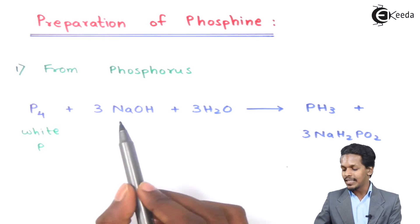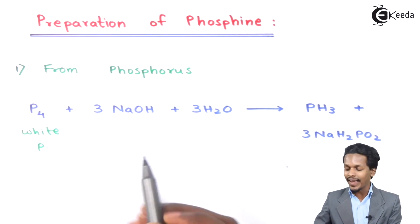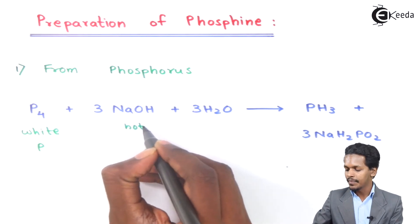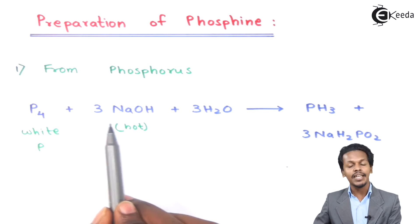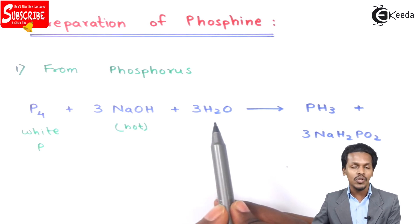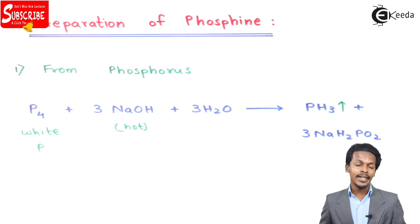Whenever white phosphorus is reacted with 3 moles of NaOH, and this is basically a hot solution that we have to consider, P4 will react with 3 moles of NaOH along with 3 moles of H2O. This is the reaction of preparation of phosphine.